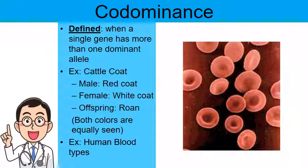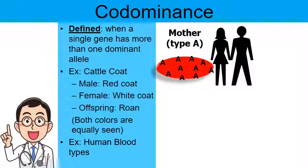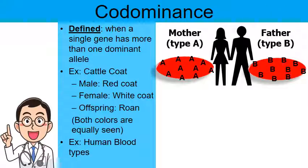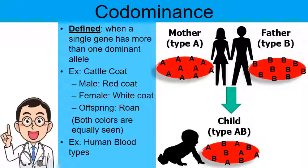Now we're going to focus on human blood types. I wanted to go over that cow example first because it's more visual. Here we have a man and a woman. Let's pretend mom has blood type A — meaning there are little proteins on the outer surface of her red blood cells called the A protein. The man has blood type B, meaning there are B proteins on the outside of his red blood cells. If they produce a child, notice how the child would have type AB blood. Is A dominant to B? No. Is B dominant to A? No. Both blood types are expressed at the same time — characteristics of blood type A from mom and blood type B from dad. So blood type AB is a great example of codominance.